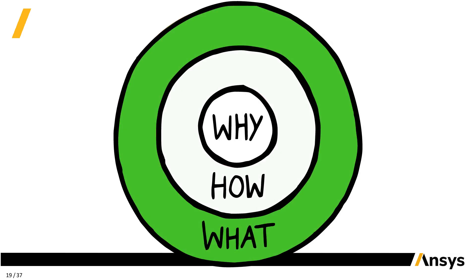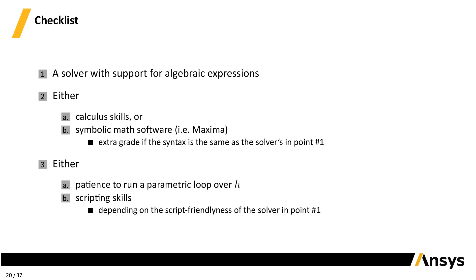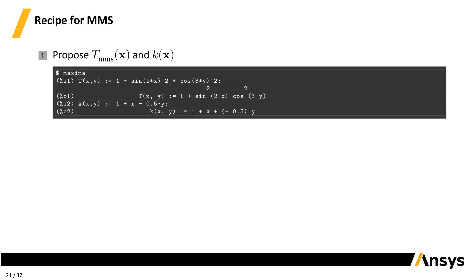Let's review what we have to do. Checklist. What do we need? Three things. 1. A solver that can handle algebraic expressions and functions of space. Pick one of the 200-ish solvers we have in the company. We are going to use OnScale's reflex solver. Check. 2. Either calculus skills or, even better, access to a symbolic math manipulation package, such as Maxima. A match between the expression syntax of the solver and the math package is a plus. Check. 3. Either a lot of patience to run a parametric loop, or better, some scripting skills, as long as your solver is script-friendly. Check. So we are ready to go.